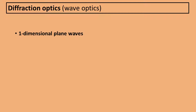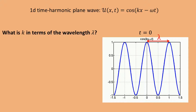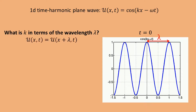Let's start with one-dimensional plane waves. This wave can be written as cosine(kx − ωt), where x denotes position and t denotes time. We've plotted the wave for a fixed time t = 0, and we can see that the function has a certain wavelength lambda. However, our equation for the wave doesn't contain any lambda explicitly. So how can we relate k to lambda? To answer that question, we must first ask: what do we mean when we say a function has a wavelength lambda? We mean that the function is periodic in space with period lambda.